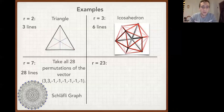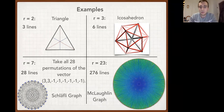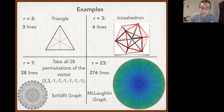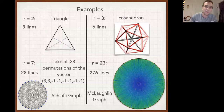The other example is the 23-dimensional case, which has 276 lines. The corresponding strongly regular graph is the McLaughlin graph. The picture shown isn't even the full McLaughlin graph — it's just the neighborhood of a vertex, because a graph that large wasn't available online.